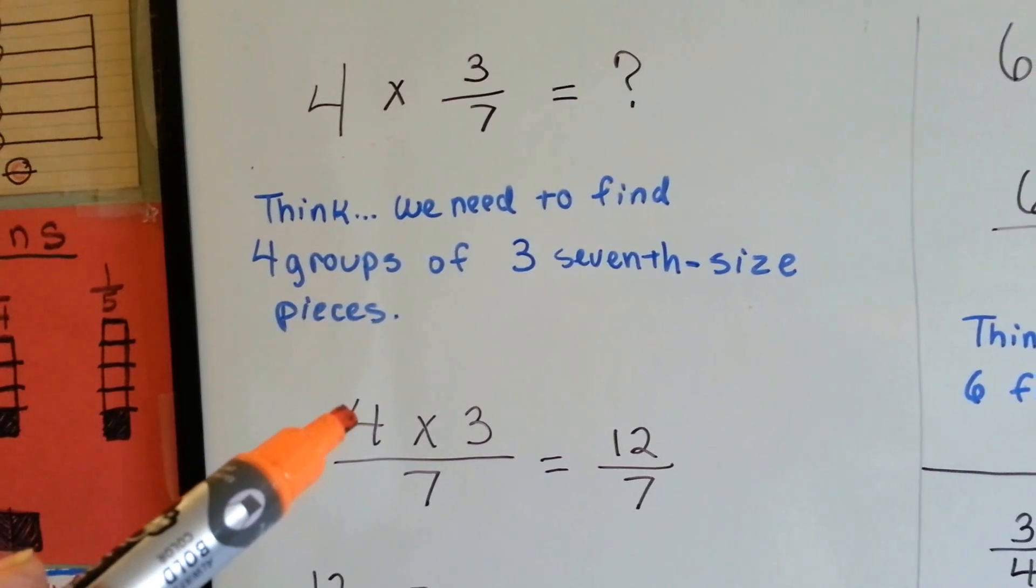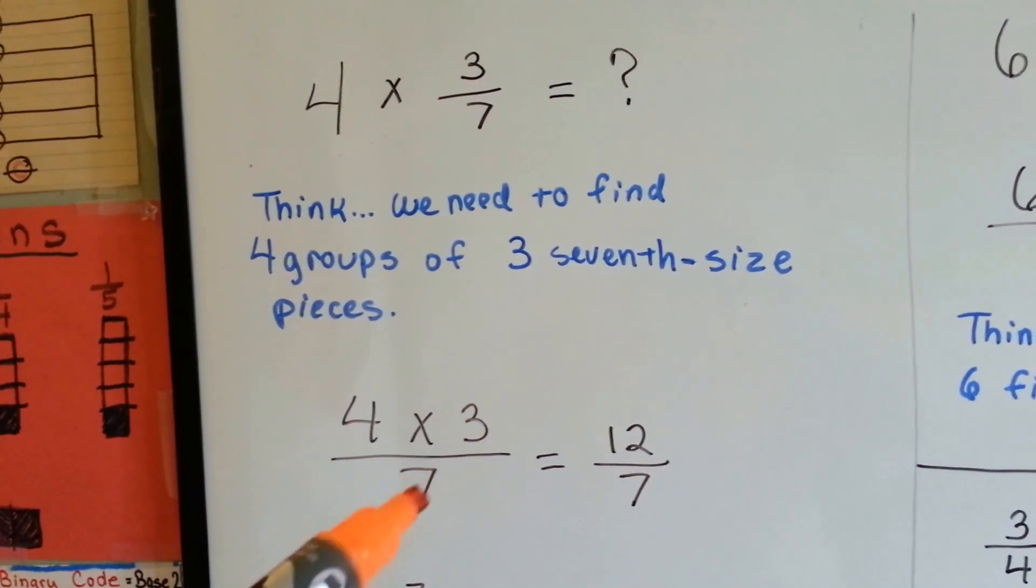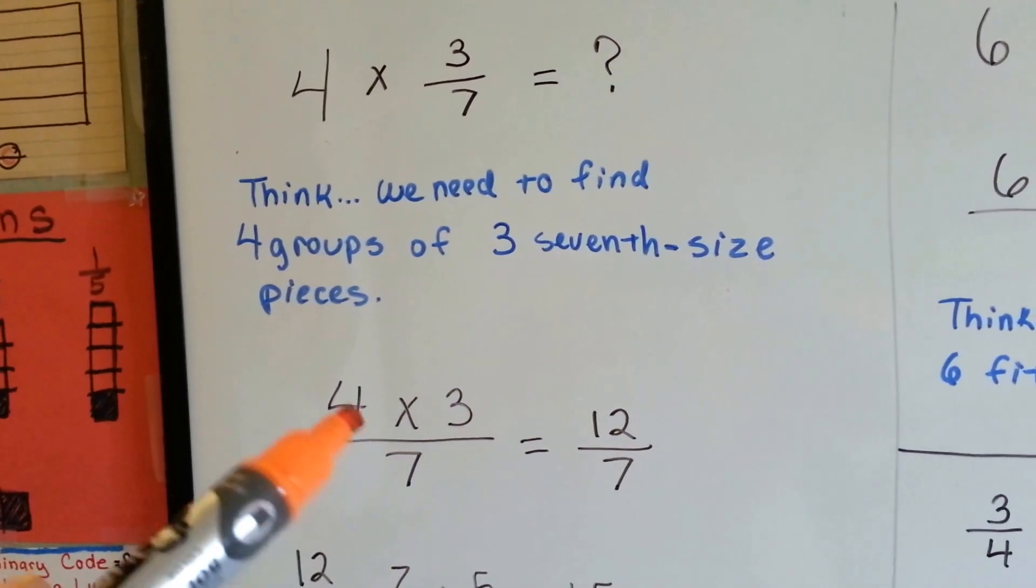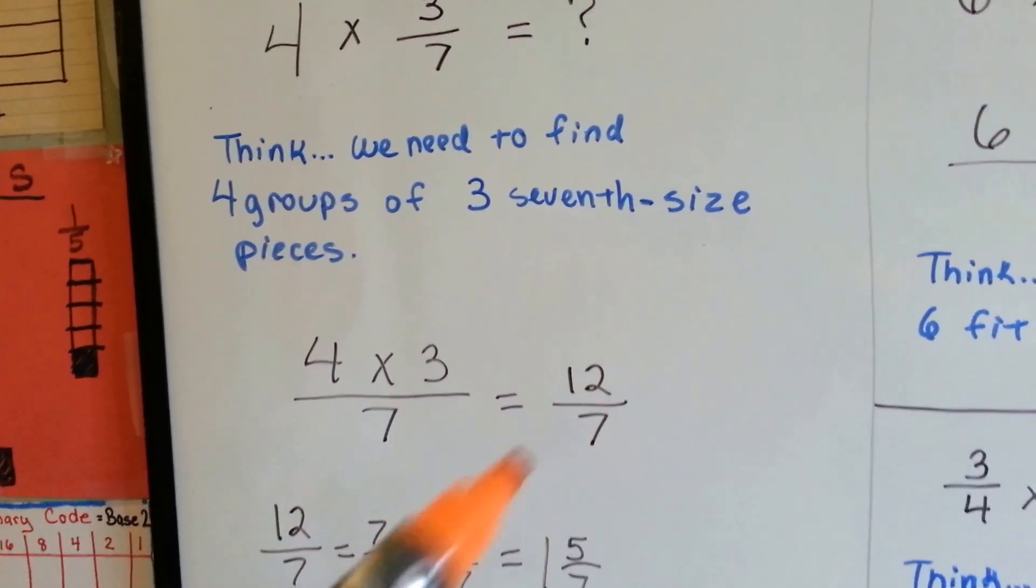We put the 4, whole number, times 3 above the denominator 7 and we do our math. 4 times 3 is 12 over 7.